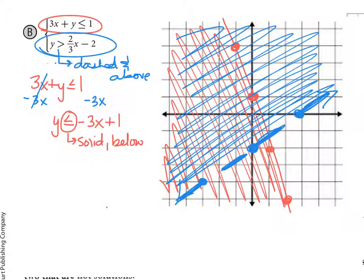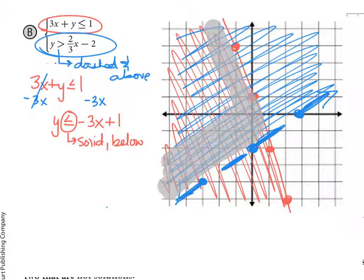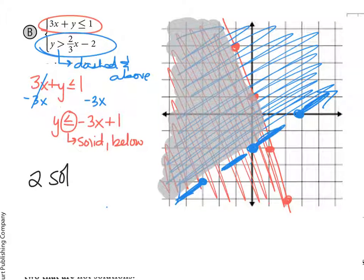So tomorrow in class, we'll use colored pencils to kind of see this area a little bit more easily, but you should see that your solution area is this kind of section in this corner where everything is overlapping. One thing that you do need to be able to do is name two points that are solutions and two that are not. So we want to name two solutions, and two solutions would just be two points that are in that area.